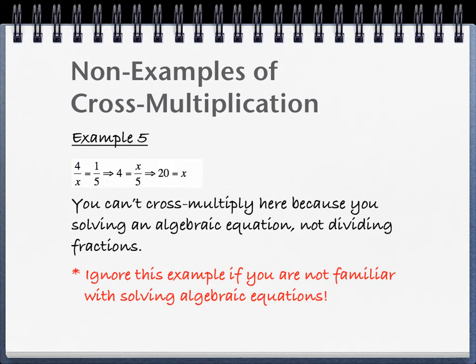Second example. 4 over x equals 1 fifth. Again, this is an algebraic equation. You can't cross multiply because there's no division involved. And you're not actually doing an operation on the fractions. This is not 4 over x plus 1 fifth or 4 over x minus 1 fifth. This is 4 over x equals 1 fifth.